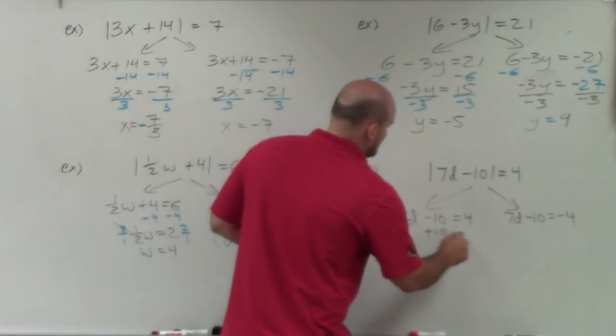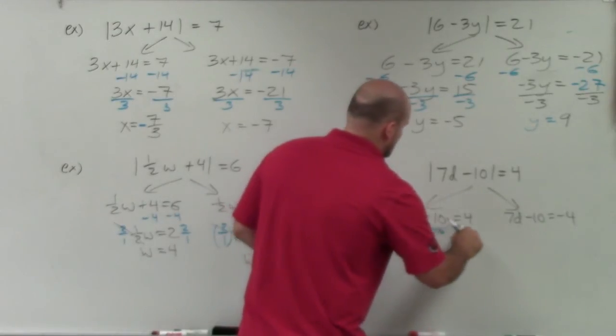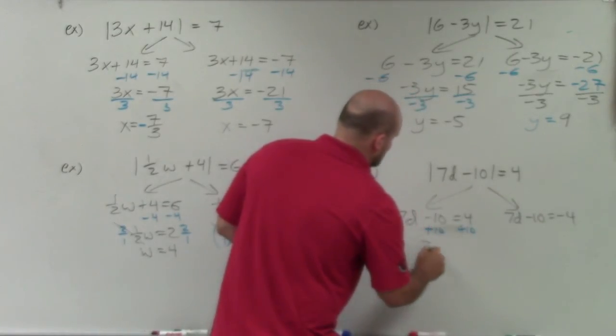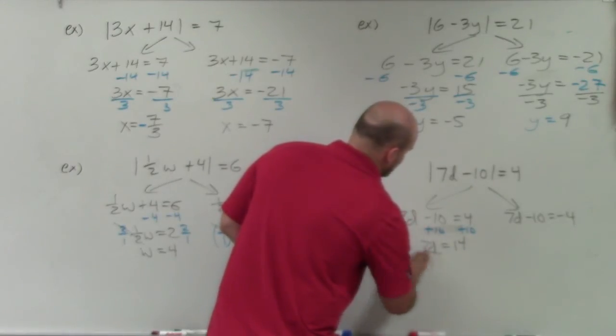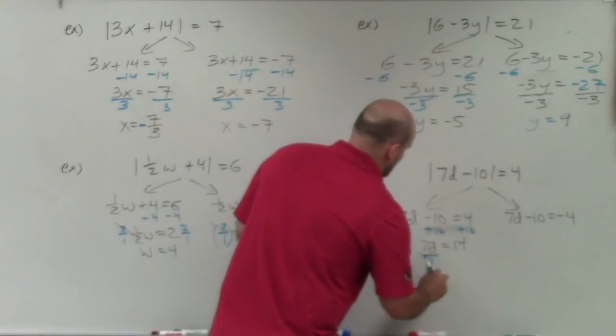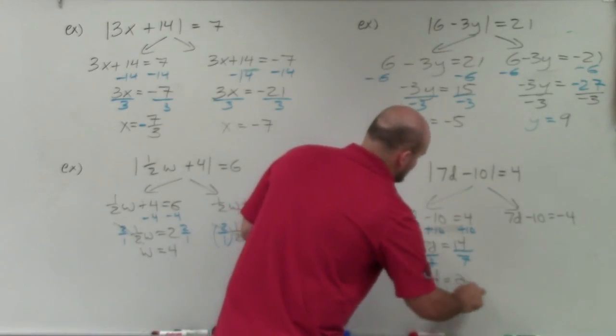Then you go ahead and solve. Use your colors. Therefore, I have 7d equals 14, divide by 7, divide by 7, d is equal to 2.